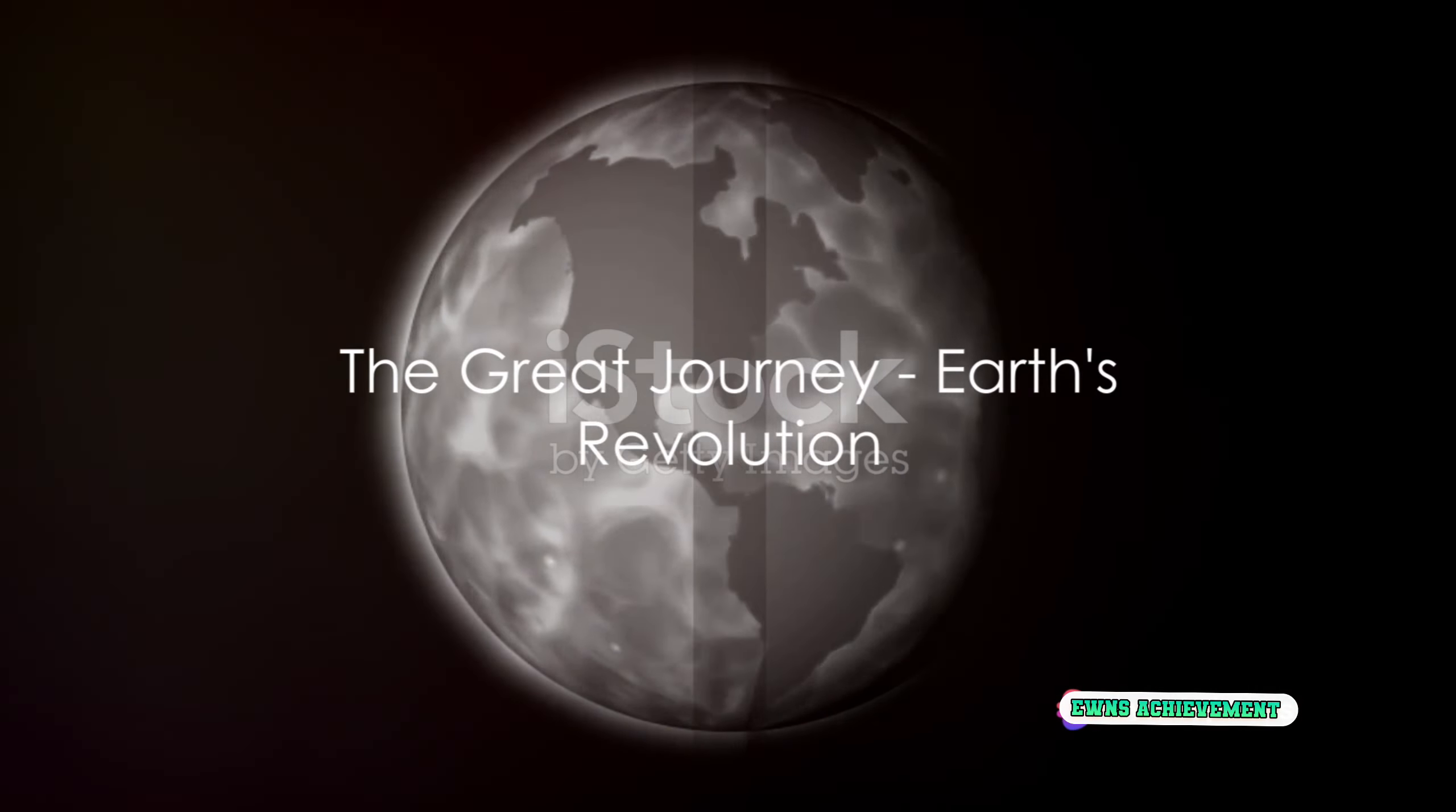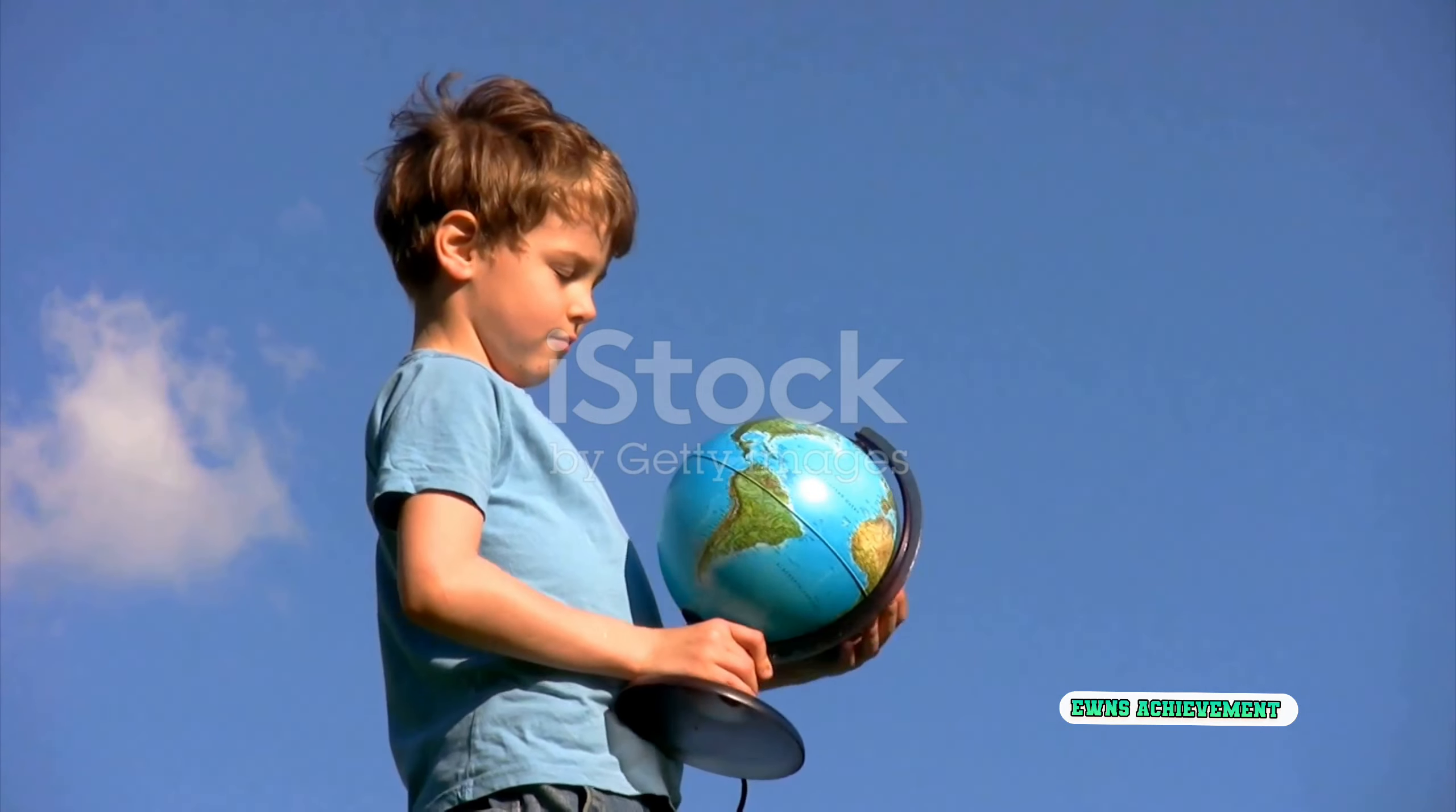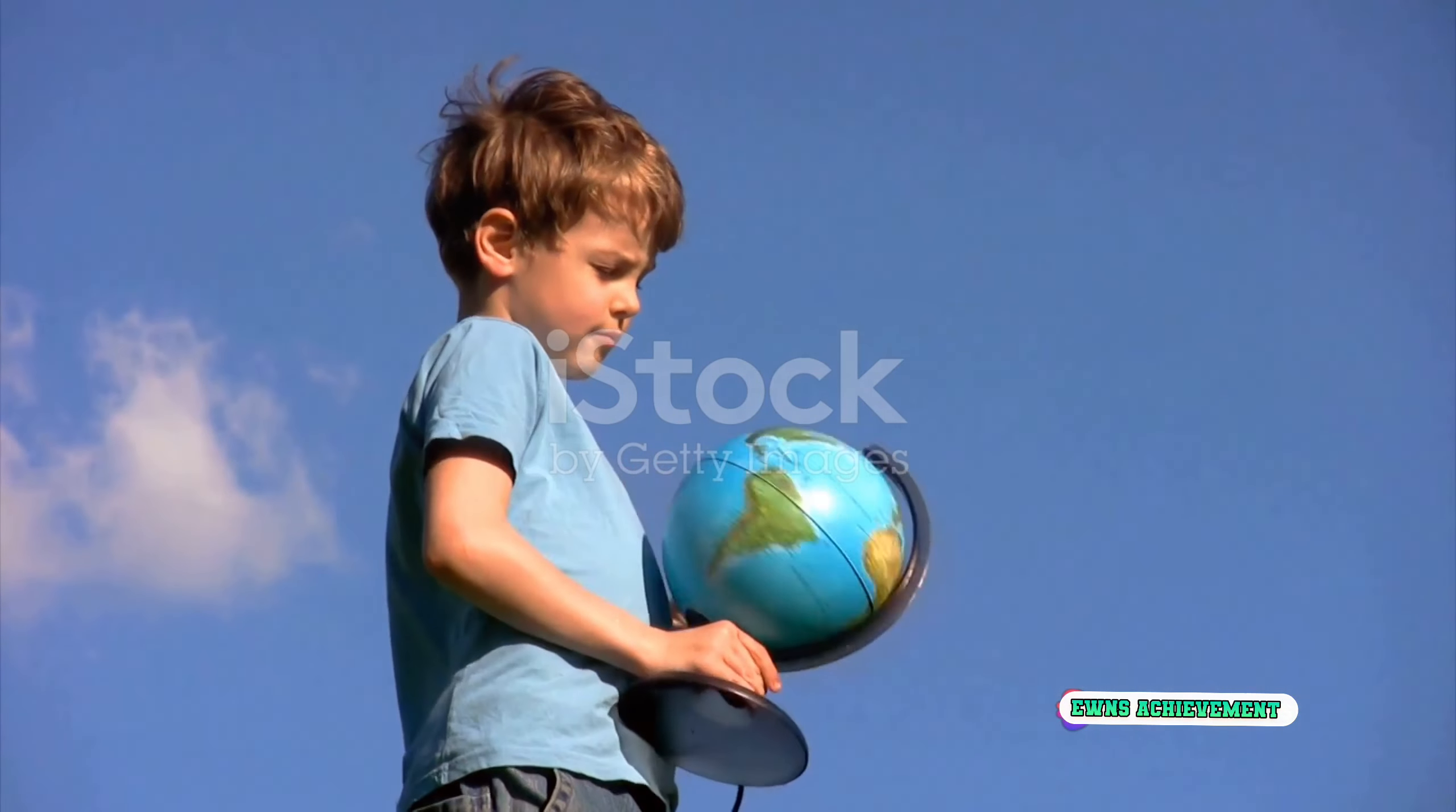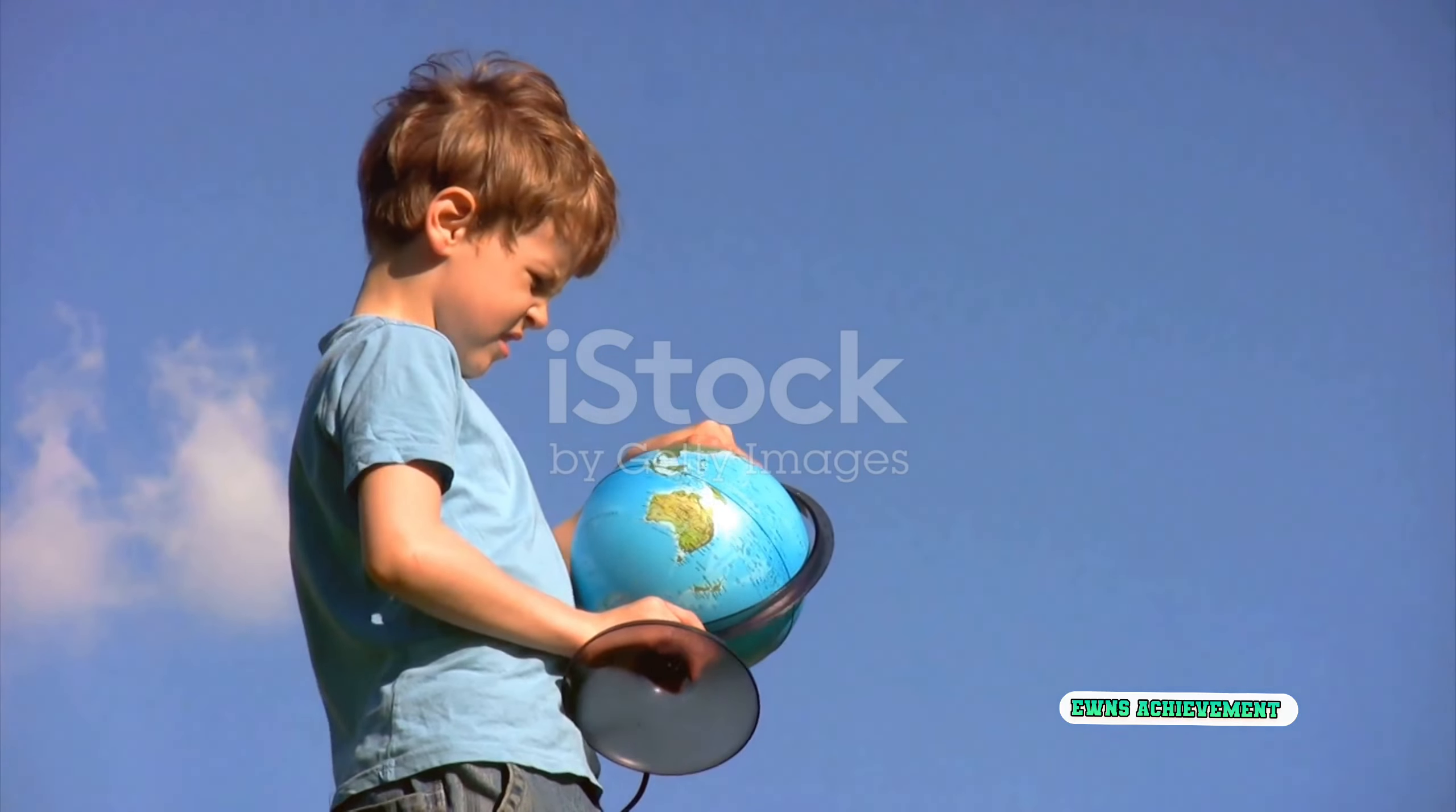Now, think of a merry-go-round. As it spins, it also moves around a central point. That's what Earth does too. So we've been spinning around on this massive merry-go-round, also known as Earth. But that's not all. While we're spinning, we're also moving in a big circle around a central point, the sun. This movement is what we call revolution.